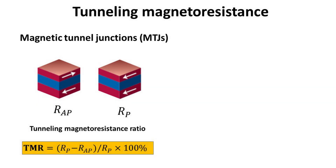In order to quantify the size of the resistance difference between these two configurations, we define the tunneling magnetoresistance ratio, or TMR for short, as shown in the yellow box. The resistance across the MTJ can be computed by basic quantum tunneling formalism for electron transport across the tunneling barrier.